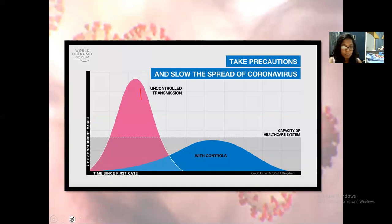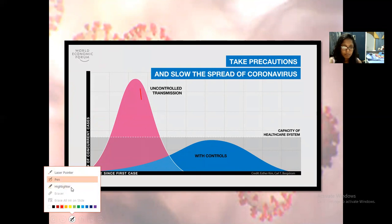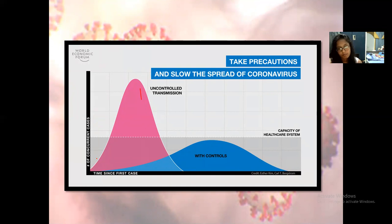The virus usually follows a certain trend of transmission. It has a lag phase initially where the numbers rise very slowly, and then there is a very sudden spike. However, as shown in the given graph, with proper control measures, the curve can be de-escalated or made more gradual.